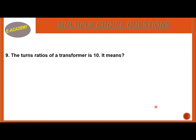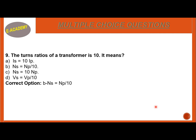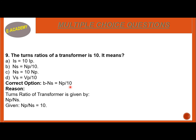Question 9: The turn ratio of a transformer is 10. It means — A. IS = 10 IP, B. NS = NP/10, C. NS = 10 NP, D. VS = VP/10. The correct option is B — NS = NP/10. The turn ratio in a transformer is NP over NS, where NP is the number of turns in the primary coil and NS is the number of turns in the secondary coil. If the turn ratio equals 10, then NS = NP/10.